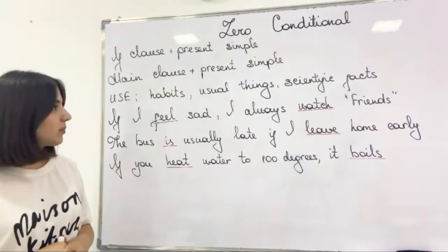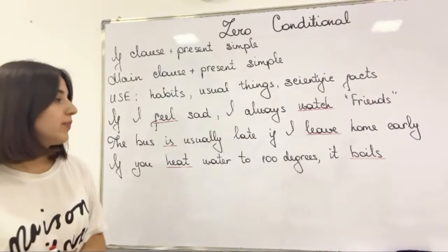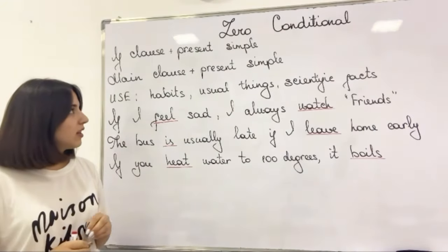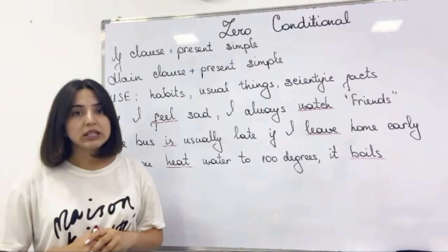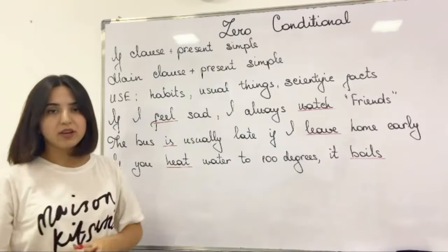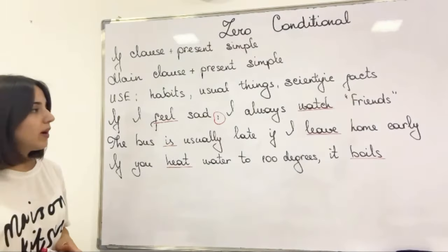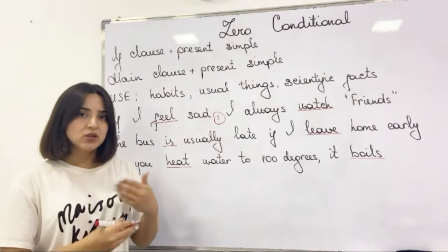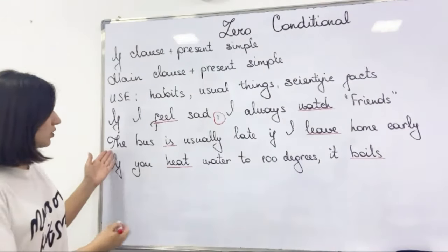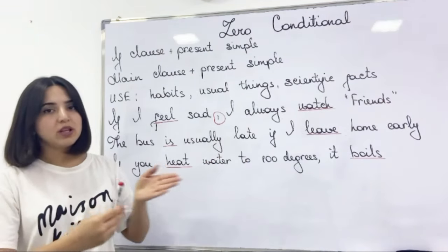And the third one, which is about a scientific fact: if you heat water to 100 degrees, it boils. Again, 'heat' and 'boils' are present simple verbs. The last thing I'd like to mention about zero conditional is: if you use the if clause at the beginning of a sentence, you should use a comma before the main clause. But it's okay to swap their places — you can use the main clause at the beginning of the sentence too. But when we use the main clause at the beginning of the sentence, we do not use a comma before the if clause or between the clauses.